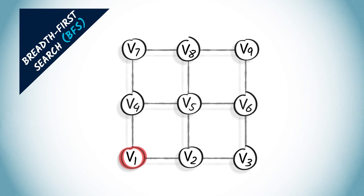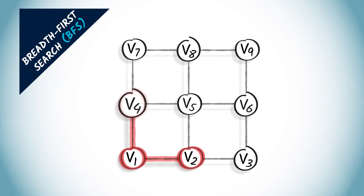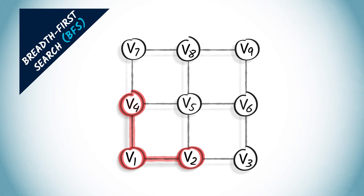We start by exploring all vertices one hop away from V1, thus connect both V2 and V4 to V1.